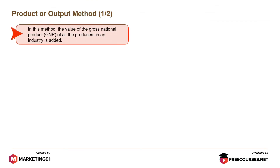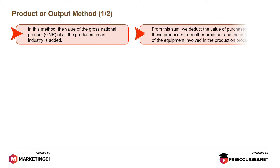In the product method, the value of gross national product or GNP of all the producers in an industry is added. From this sum, we deduct the value of purchases made by these producers from other producers and the depreciation of the equipment involved in the production process.